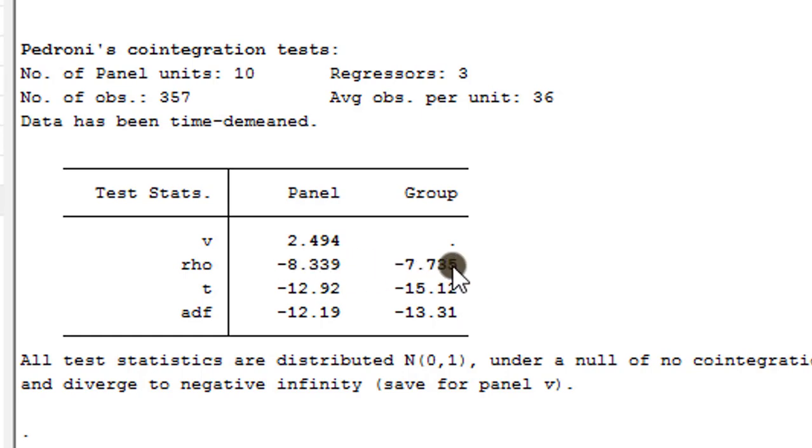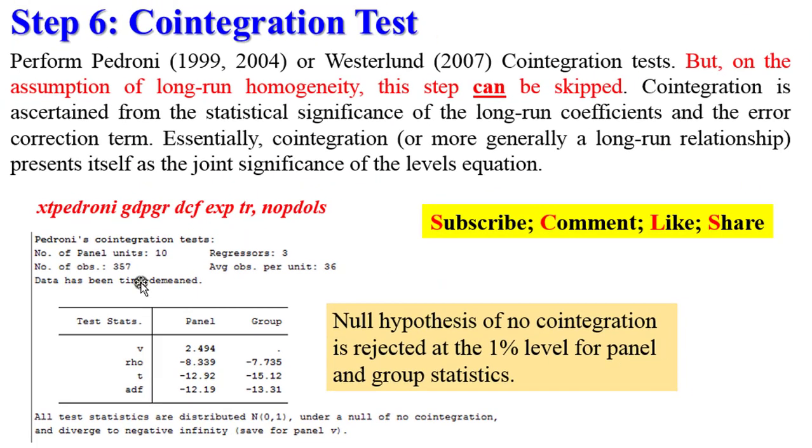In absolute terms these figures are greater than two, so we can confidently say that our panel exhibits co-integration among the variables. But again, I said you can skip performing the Pedroni test. Let's move now to PowerPoint. Here is our result I showed you from Stata. The null hypothesis of no co-integration is rejected even at the one percent level for panel and group statistics. In absolute terms these figures are greater than two.